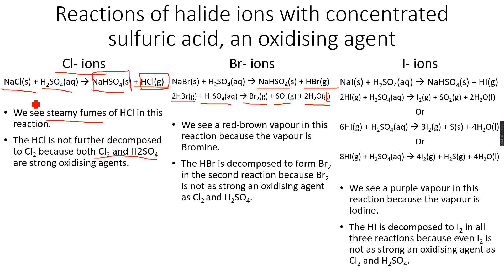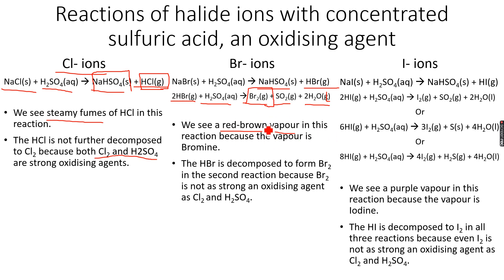We do not see a similar reaction in the case of chloride ions because Cl₂ is quite strong as an oxidizing agent — its oxidizing abilities are similar to those of sulfuric acid, and that's why sulfuric acid is not able to oxidize HCl. In this reaction with bromide, we see a red-brown vapor because bromine gas is produced, and that is the observation for this reaction.